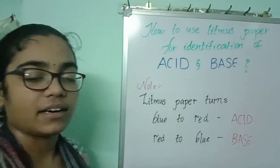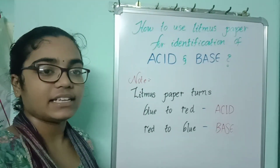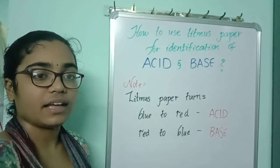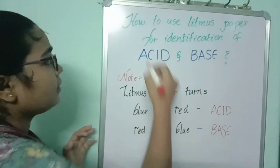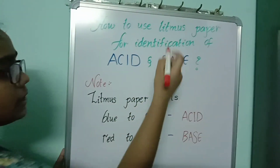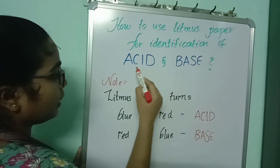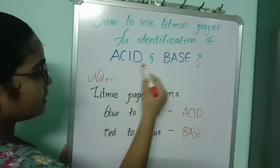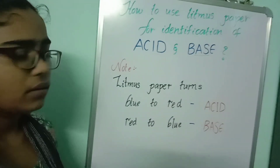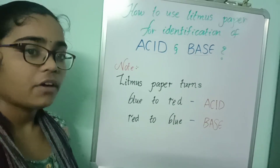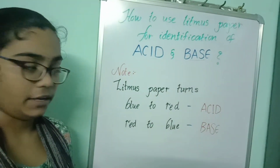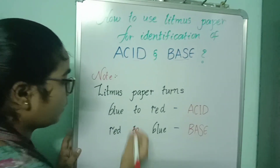My name is Sai Teja. I am studying 10th standard in Biramstitareti International School. Today we will discuss about how to use litmus paper for identification of acid and base. For performing this experiment, we have to know two basic points. Let us see what they are.